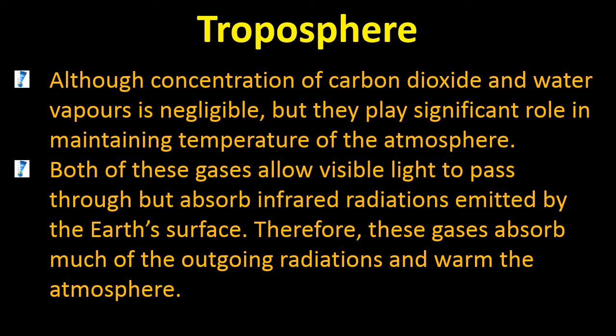Both carbon dioxide and water vapour allow visible light to pass through but absorb infrared radiations emitted by the Earth's surface. Therefore, these gases absorb much of the outgoing radiation and warm the atmosphere. When rays from the Sun reach Earth as UV rays and strike the surface, the rays re-emitted are infrared radiations. Some of these infrared radiations are trapped by carbon dioxide, keeping the Earth warmer.